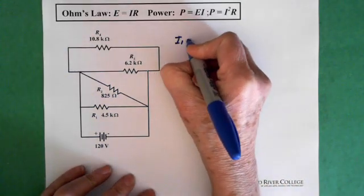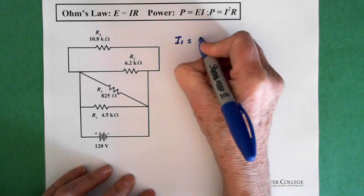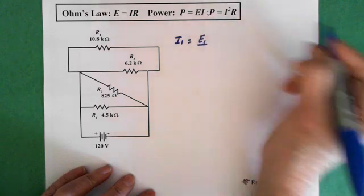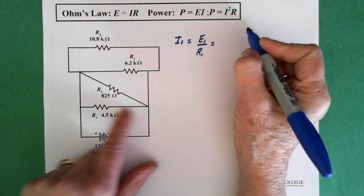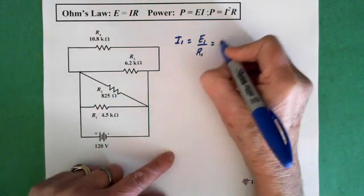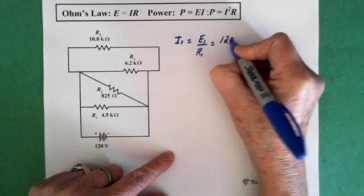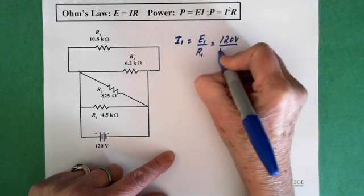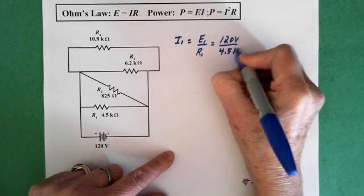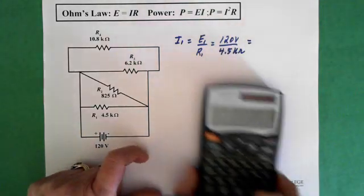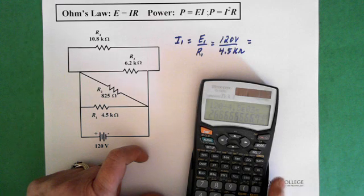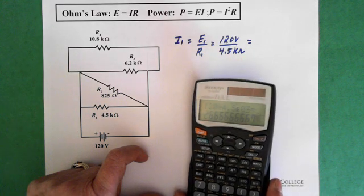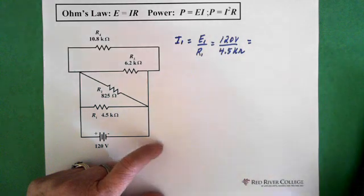So I1 equals the voltage across resistor 1 divided by R1. The voltage across resistor 1 is 120 volts. So we have 120 volts divided by 4.5 kilohms. So we end up with 120 divided by 4.5 exponent 3 equals 26.67 milliamps.